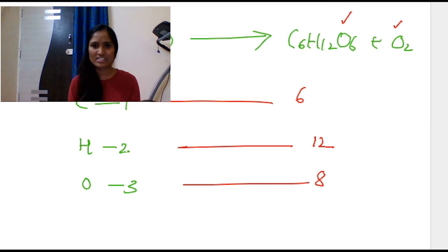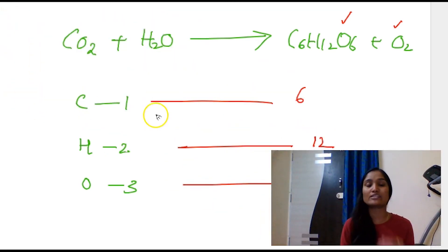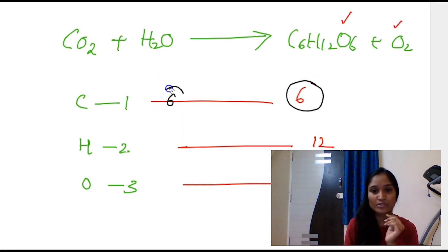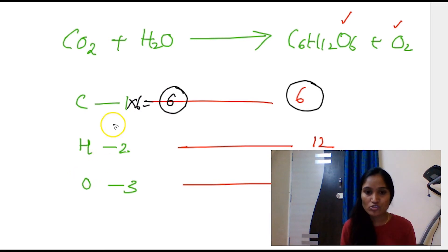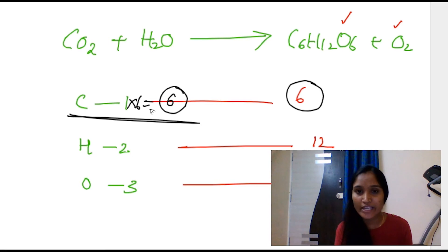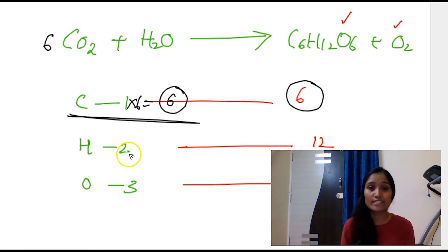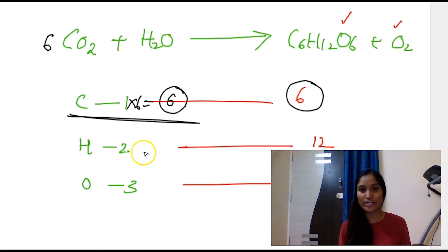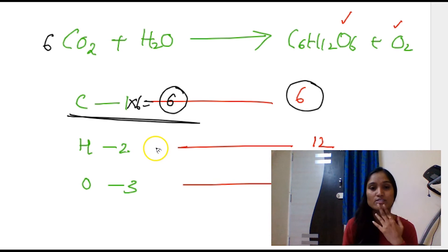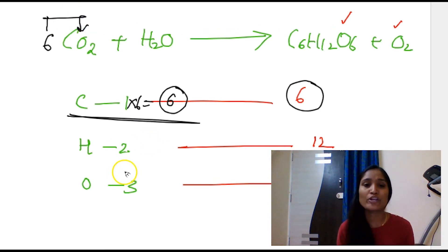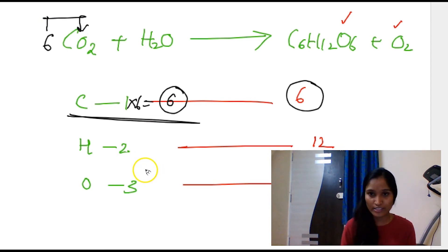Start with carbon — it's easy because you have an even number and just one on the other side. To balance, your final count should be 6 carbons on the left. Multiply CO2 by 6 — place the prefix 6 before CO2. But constantly check: after placing 6CO2, the oxygens on the right-hand side are now 6 × 2 = 12, plus the 1 from H2O on the left side. The running count changes.